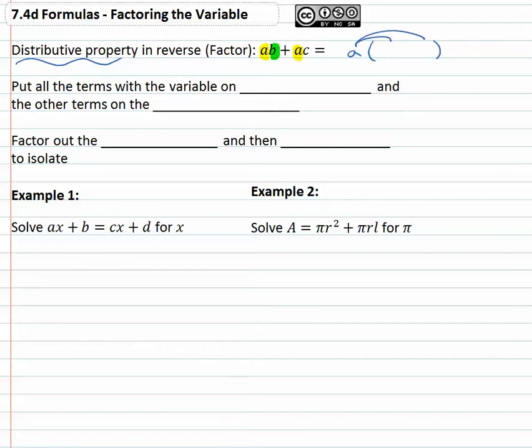The a was first multiplied by the b, and then it was multiplied by the c, keeping the sign with it. And so we can take that thing that's in common on both and factor it out or reverse distribute it. Pull it out of the parentheses. The parentheses then are representing everything that was left behind after we pulled that a out, the b plus c.